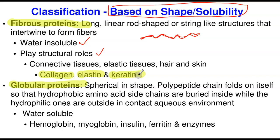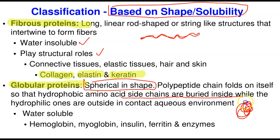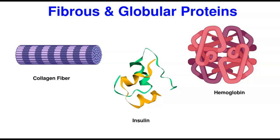Globular proteins are spherical in shape. They consist of polypeptides that fold on themselves so that the hydrophobic side chains are buried inside, away from water, while the hydrophilic ones are in contact with the aqueous environment. This folding makes them spherical. They are usually water-soluble. Good examples include hemoglobin, myoglobin, insulin, ferritin, and most enzymes, which are usually globular proteins because they need to be compact to fit into cells.